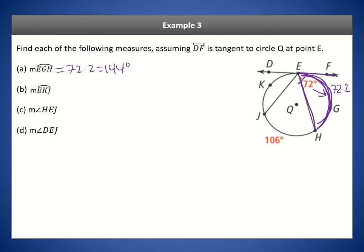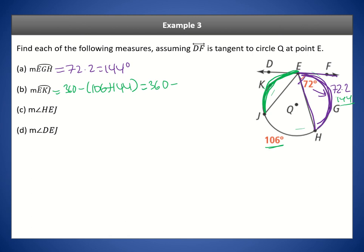Now for arc EKJ: we know the arc HE is 106 and arc EGH is 144. Since all arcs add up to 360, arc EKJ equals 360 minus 106 plus 144, which is 360 minus 250, giving us 110 degrees.